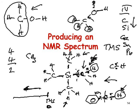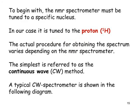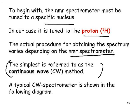The NMR spectrometer must be tuned to a specific nucleus — in our case the proton, or it might be the C-13 nucleus. The actual procedure for obtaining the spectrum varies depending on the particular NMR spectrometer. In some cases it keeps the strength of the magnetic field constant and varies the wavelength of the electromagnetic radiation; in other cases it does the opposite. The simplest is referred to as a continuous wave or CW method.